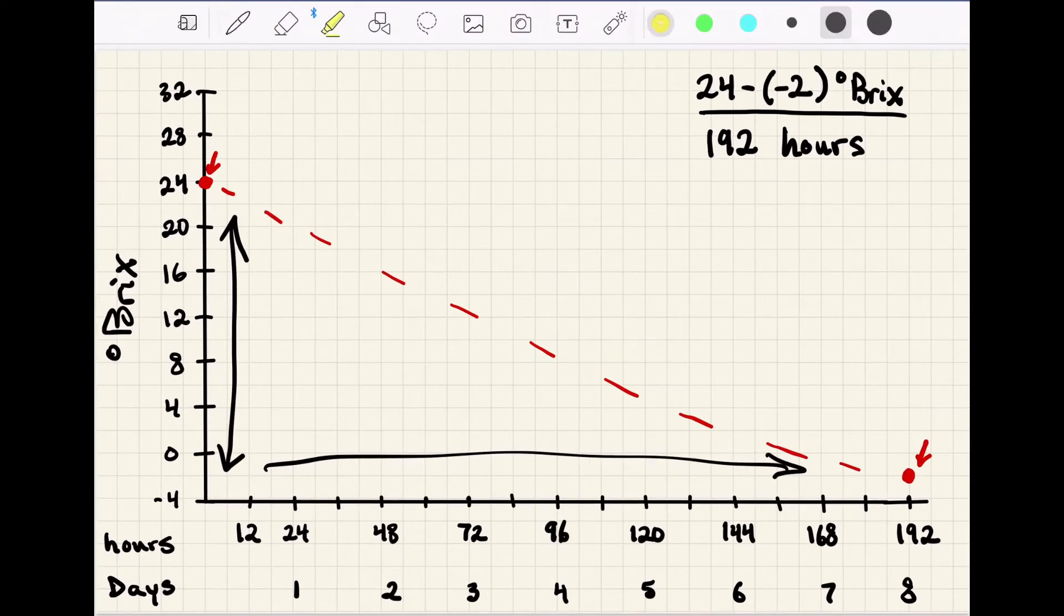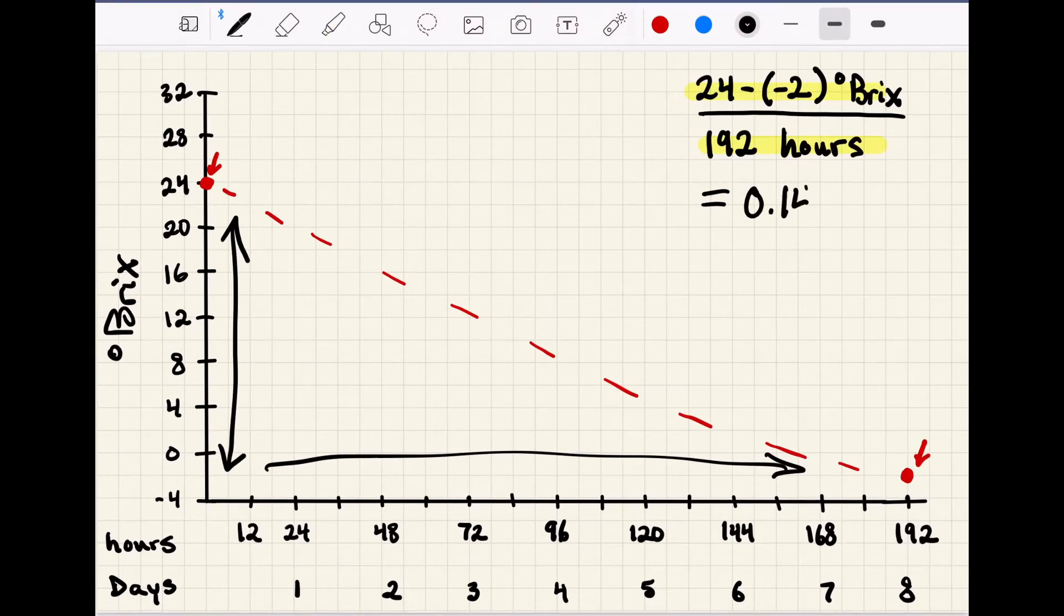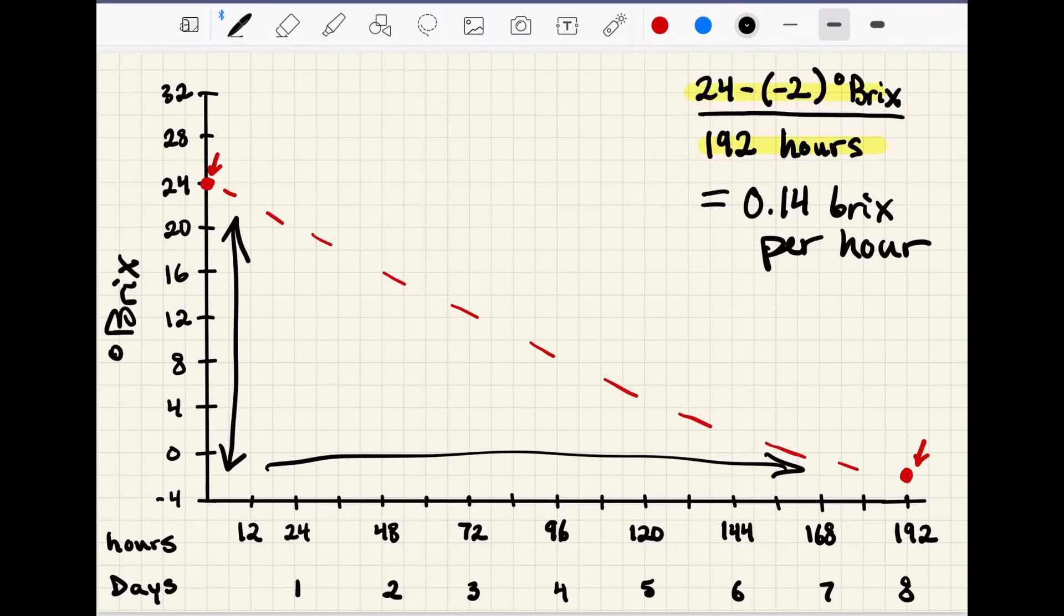And if we do that calculation as shown up here, we have a difference of 26 bricks over 192 hours. So 26 divided by 192 is 0.14 bricks per hour. But our fermentation curves don't usually look like this and we usually don't wait eight days between bricks checks.